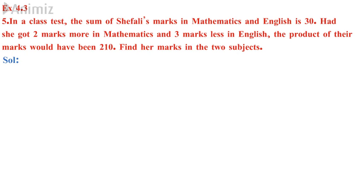Next, had she got 2 marks more in mathematics - mathematics mark is x, when it is 2 marks more it is x plus 2. And 3 marks less in English - English mark is 30 minus x, so when it is 3 marks less it is 30 minus x minus 3, you will be getting 27 minus x. The product of their marks is 210. So x plus 2 into 27 minus x is equal to 210.